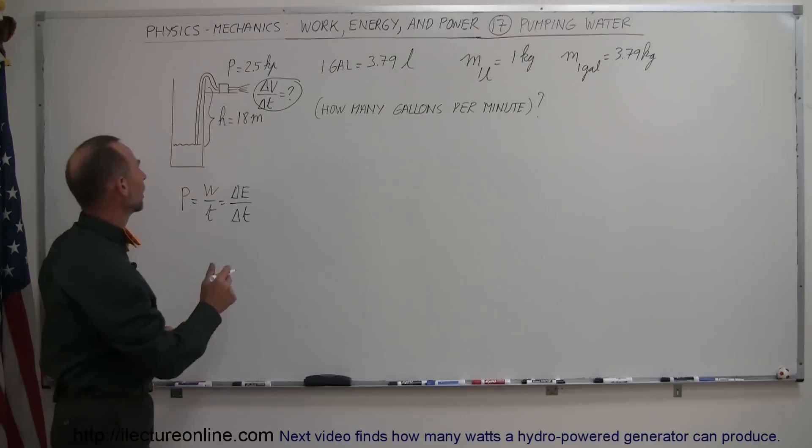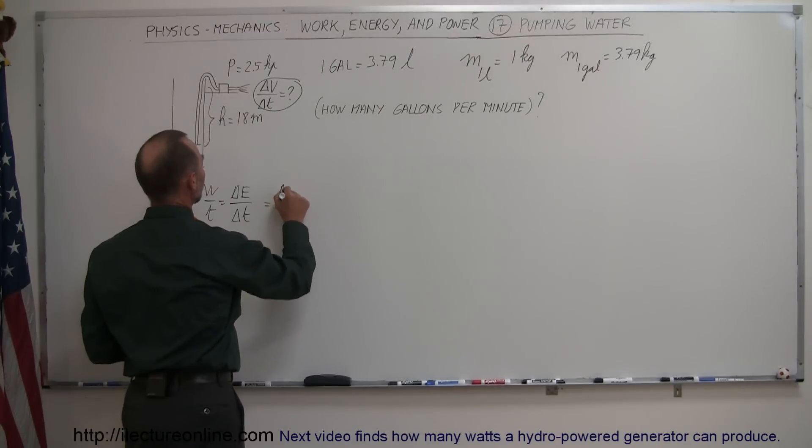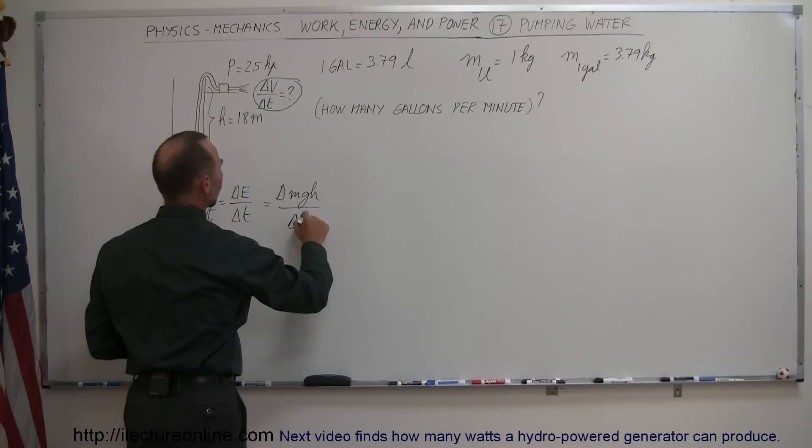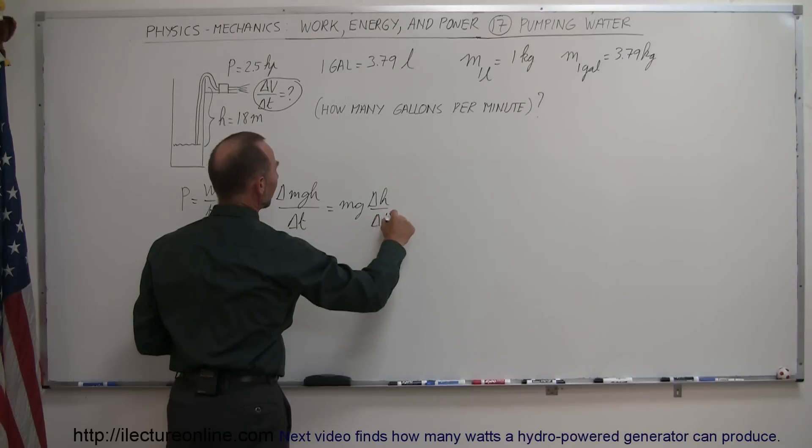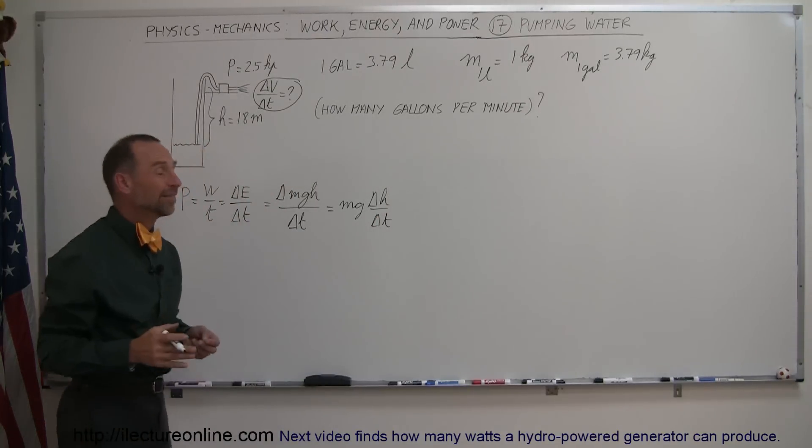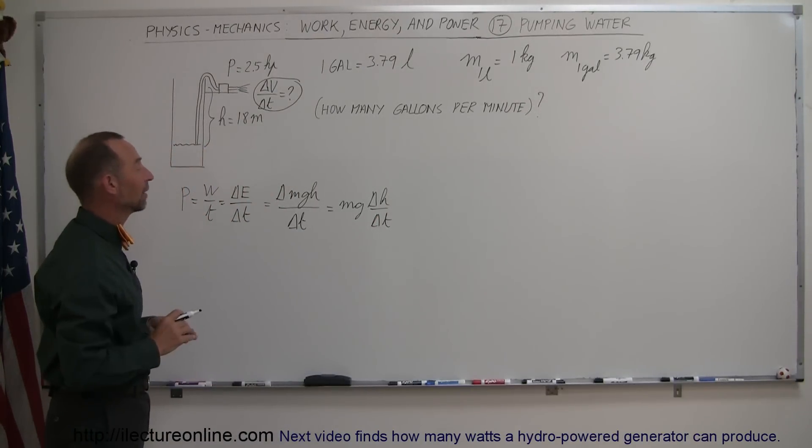Let's say it just kind of dribbles out slowly. So this is the change in MGH over time. And of course, M and G are constants, so this is equal to MG times delta H over delta time. And so at what rate can we lift the water out there?